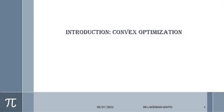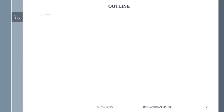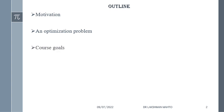I will discuss the introductory part of convex optimization. The outline is as follows: first I will talk about the motivation behind this course — why we are going to study it and what its utilization is. Then I will discuss one interesting optimization problem, followed by the course goal, how the course will be organized, further readings, related courses, books, and other references.